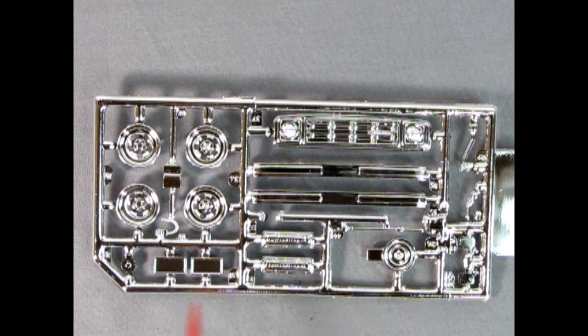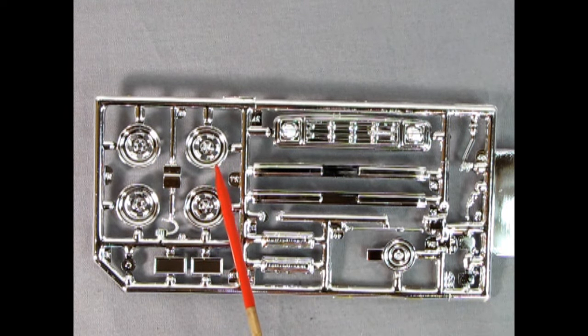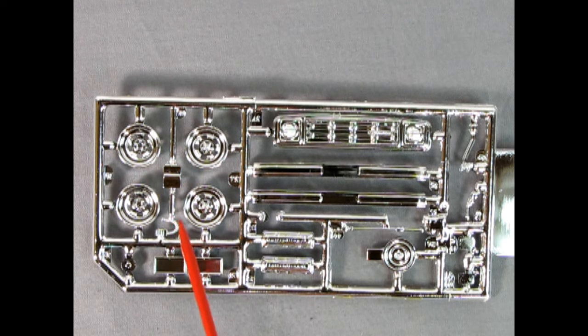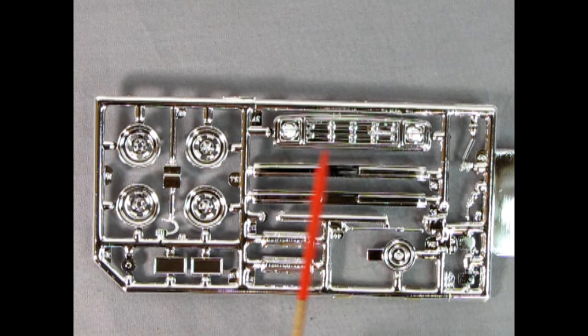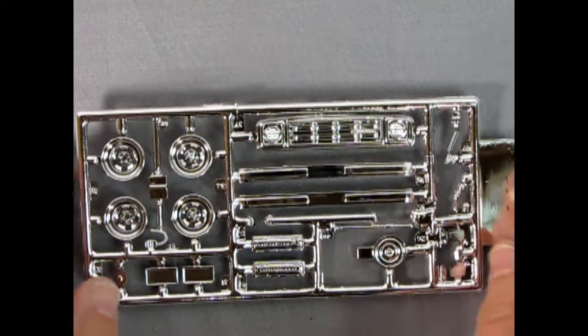Here we have our wonderful chrome parts tree. You can see our wheels, and they do actually have the slots going all the way through, so you can see through the back. And then there's our grille, our front bumpers, our air cleaner, our valve covers, as well as the license plates, the gas filler cap, our shift levers, and side mirrors.